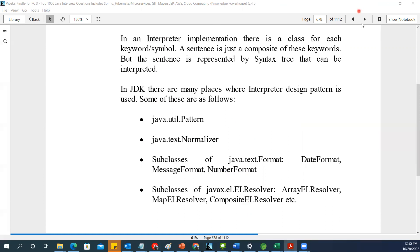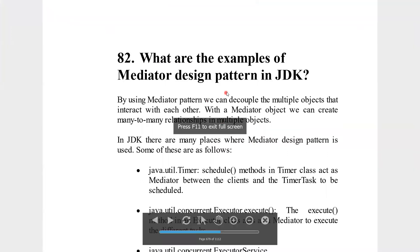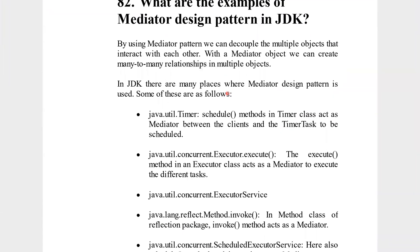The next question is: what are the examples of the mediator design pattern in JDK? What is a mediator and how is it different from an adapter? With the mediator, we can decouple multiple objects that interact with each other. Therefore, it is always useful to create many-to-many relationships. An adapter, on the other hand, transforms one particular object to another object — that is how they differ.